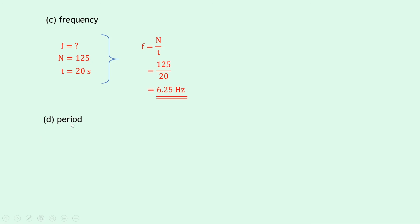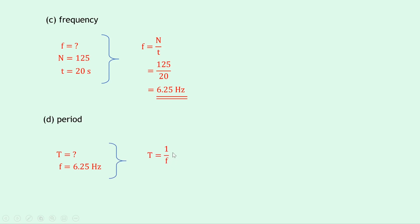And lastly, part D, the period of the wave. We're trying to find T, and we now know that the frequency from part C is 6.25 hertz. Writing down our relationship between the period and the frequency, we have T equals 1 over F. Substituting in our numbers, we have 1 divided by 6.25, which gives an answer of 0.16 seconds.